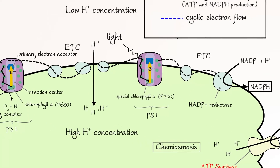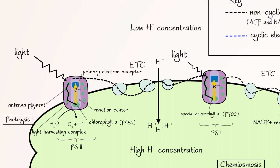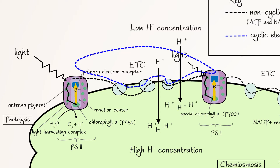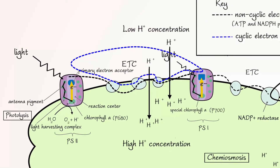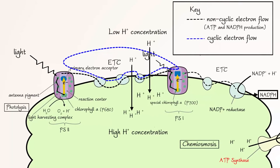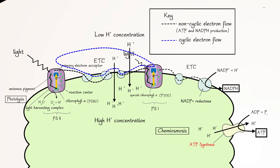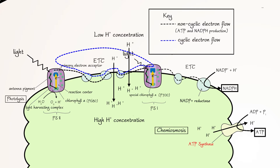Now let's talk about cyclic electron flow. In this pathway, the electrons are cycled back to the first electron transport chain. As the electrons flow down the first electron transport chain, protons are pumped from the stroma into the thylakoid space. The sole purpose of this pathway is to continue generating a proton gradient that can be used to synthesize ATP via chemiosmosis. In this pathway, electrons are not delivered to NADP+, thus ATP is the only energy product produced by cyclic electron flow. To reiterate: non-cyclic electron flow produces both ATP and NADPH, whereas cyclic electron flow produces ATP only.